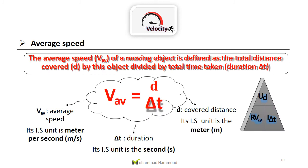We conclude that the average speed — written as V with a subscript 'a' — is defined as the total distance covered (d) divided by the total time taken. So average speed equals distance divided by time. The SI unit for average speed is meter per second — because distance is in meters and time is in seconds, so the unit for average speed in the international system is meter per second.